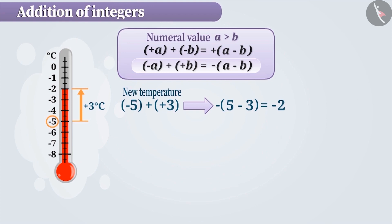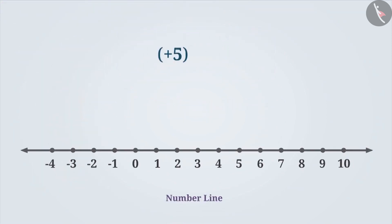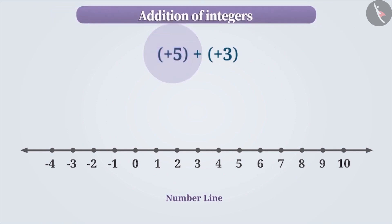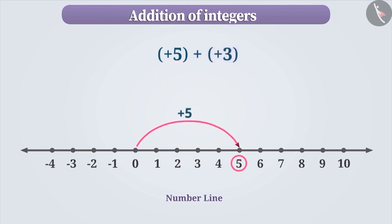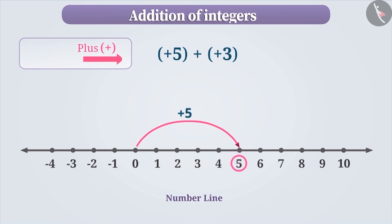Addition of integers can also be done on a number line. To find the value of plus 5 plus plus 3 on a number line, mark plus 5 on the number line first. Since 5 is a positive integer, it is located 5 steps towards the right of 0. While adding 2 integers on a number line, if the sign of the second integer is positive, then move towards the right side of the first integer. If the sign is negative, then move towards the left of the first integer. Since the sign of the second integer is plus, I move 3 steps towards the right of 5. We now arrive at plus 8.